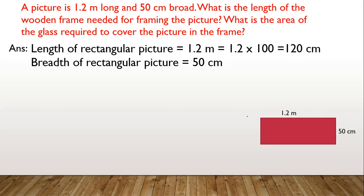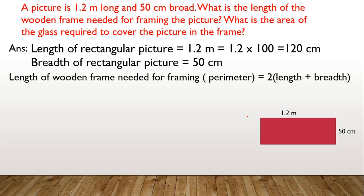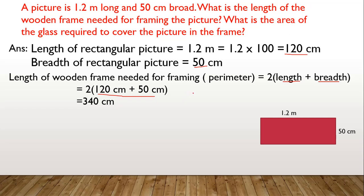The length of the wooden frame needed equals the perimeter of the rectangle. The formula is: perimeter = 2 × (length + breadth). Substituting the values: 2 × (120 + 50) = 2 × 170 = 340 centimeter. Hence we need a wooden frame of length 340 centimeter.